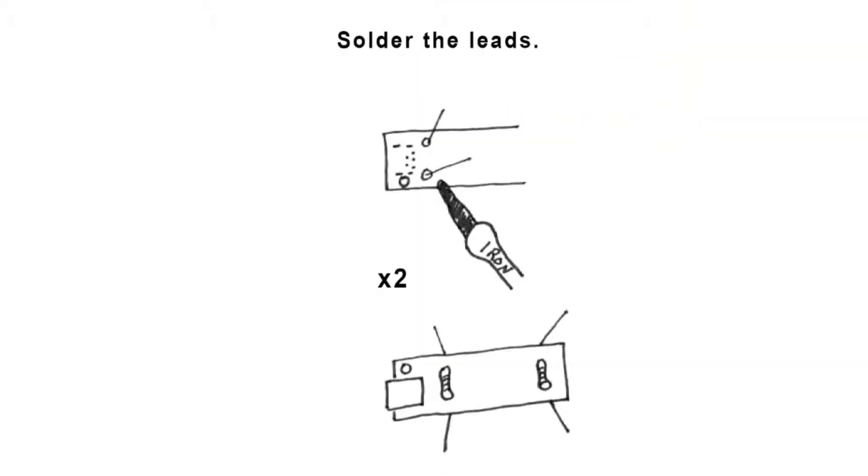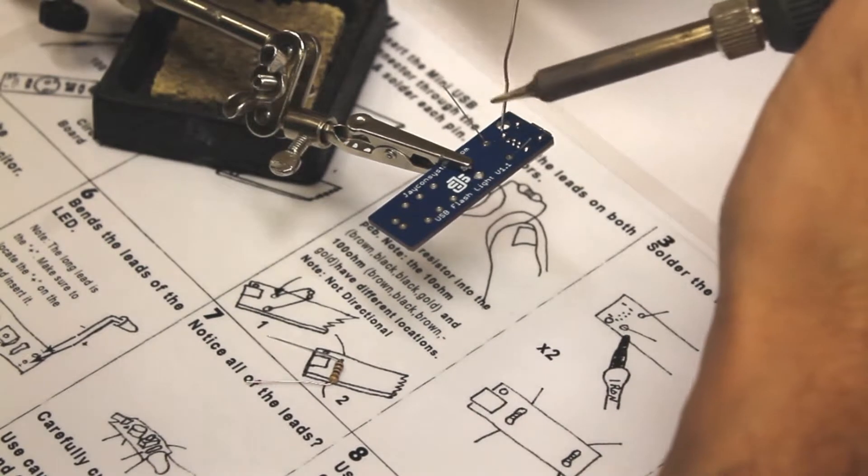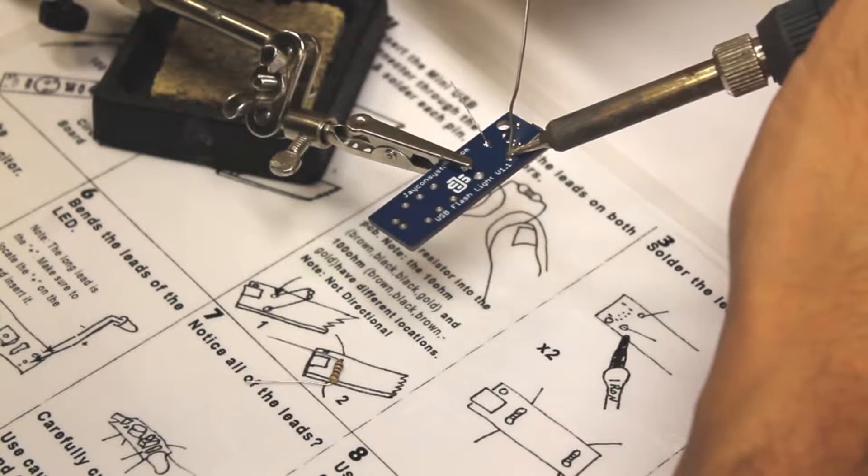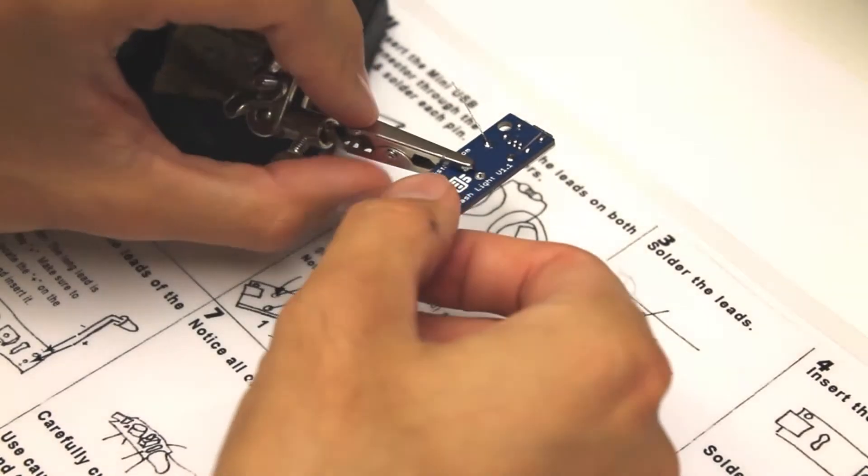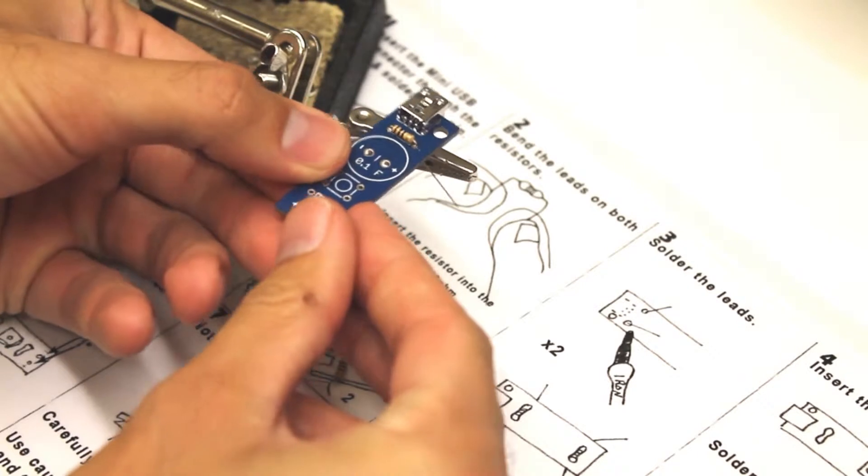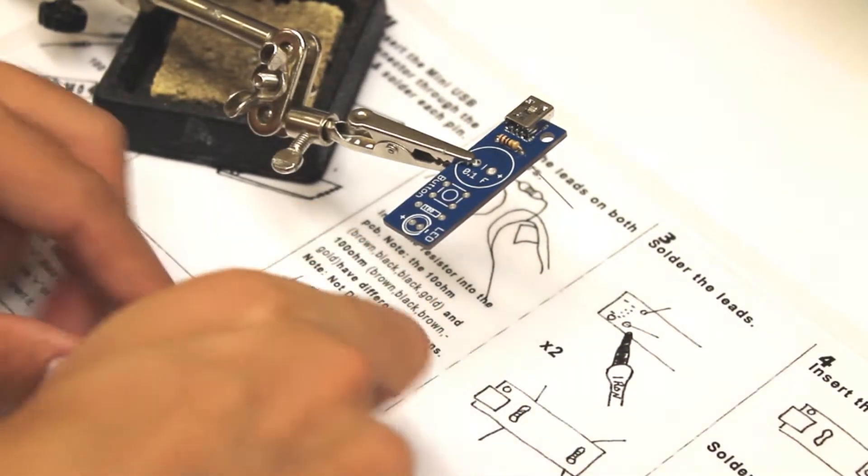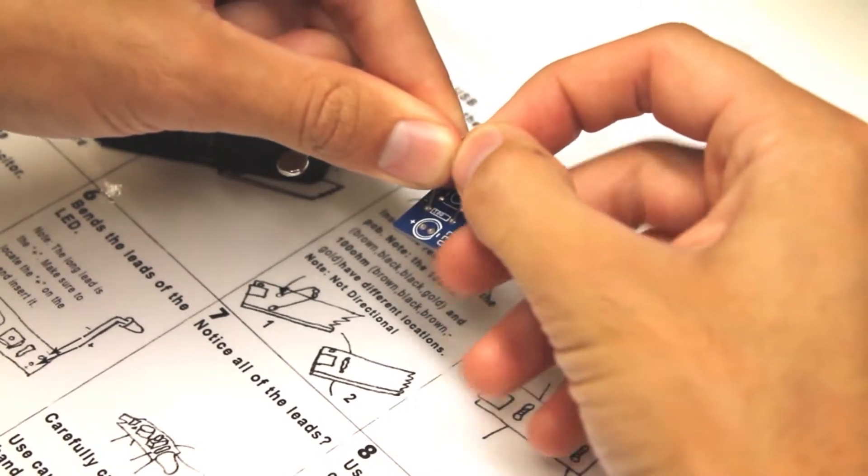Go ahead and solder the leads. Take your time. You're not in a rush. Make sure not to put too much solder on the leads. Locate your 100 ohm resistor and insert it into the holes for the 100 ohm resistor. It doesn't matter. It's not directional. So that means that you can put it in either direction.